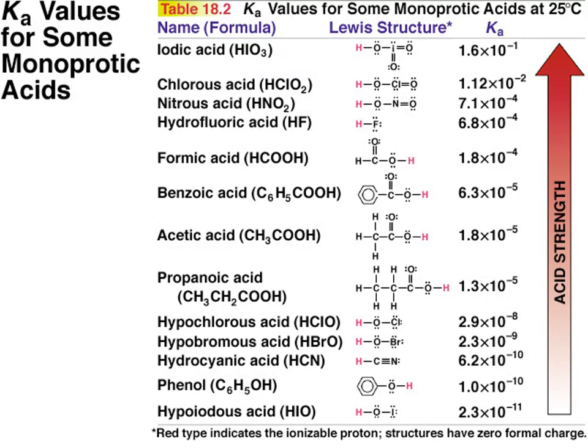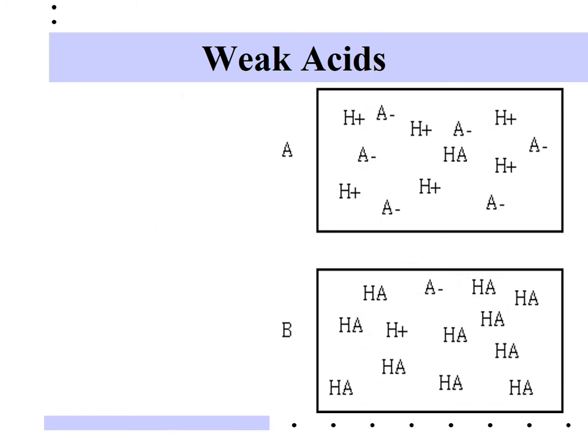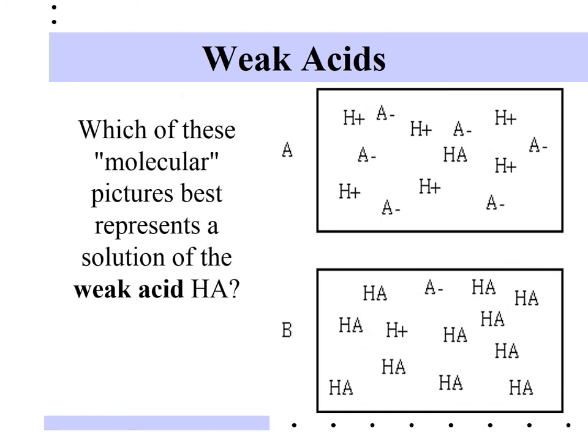This table shows information from page 8 of your data booklet. Ka values may differ slightly between sources since they are measured values — we'll use the Ka values in our data booklet unless a problem gives specific values. Pause the video and discuss with a neighbor which picture, A or B, represents a weak acid solution versus a strong acid solution.